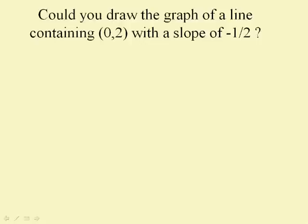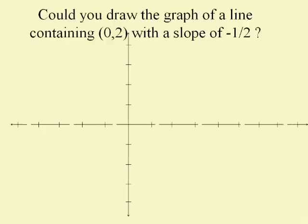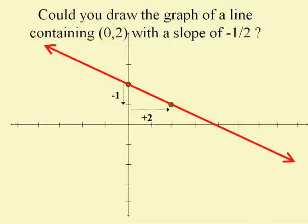I propose that if I gave you one point and a slope of a line, you could draw that line on a graph. Let's draw the graph of a line containing the point (0, 2) — go over zero and up two — and execute the slope negative one-half. That means between any two points I'm going to go down one and over two. From the point (0, 2), I'll go down one and over two, and I must be at another point on the line. With two points I know where the line is.